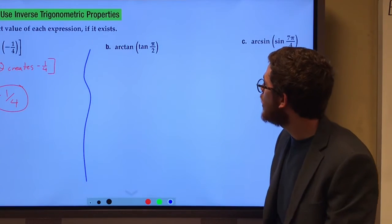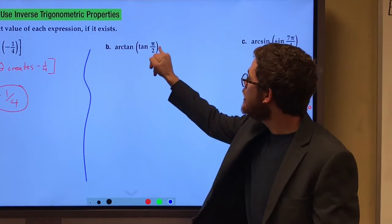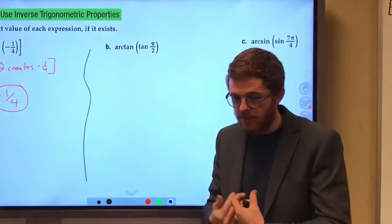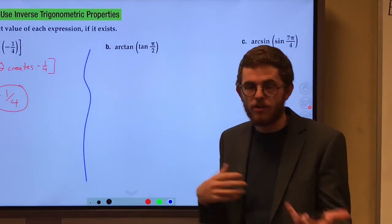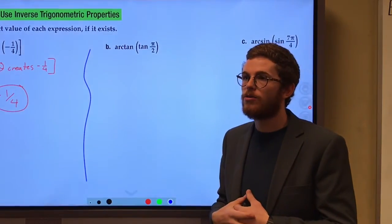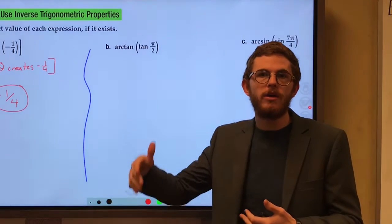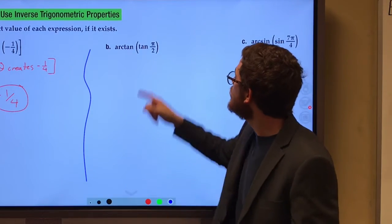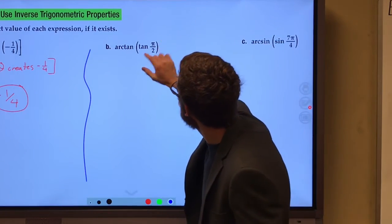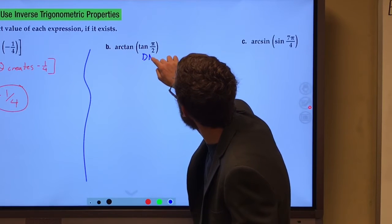Arctan of tangent of pi over two. Well, tangent of pi over two, can we take the tangent of pi over two? We can look at the unit circle and say pi over two, that's zero-one, one divided by... oh, tangent of pi over two does not exist.